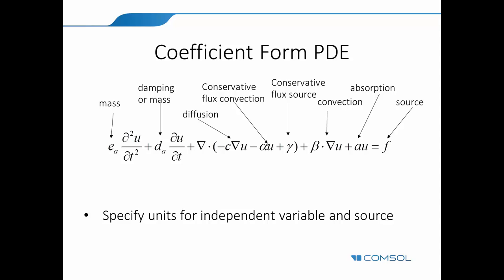Now, we have a lot of terms here to be entered. In this equation, we have eight terms, but we are saying specify the units for the source term F and for the independent variable. Why not specify the others, then? How is that enough? How is it enough to specify two units for just two quantities when you have multiple pairs in your equation?